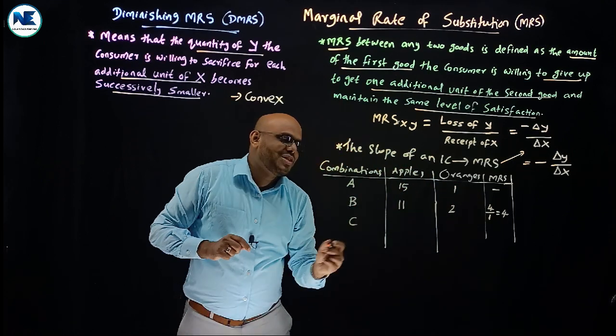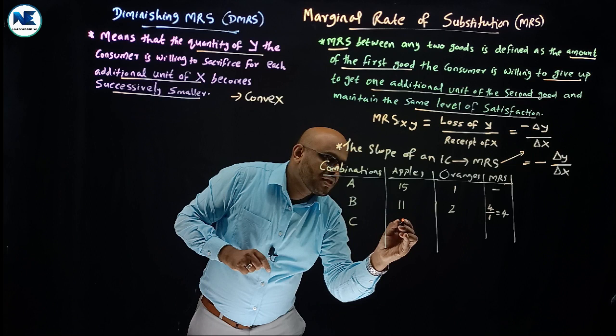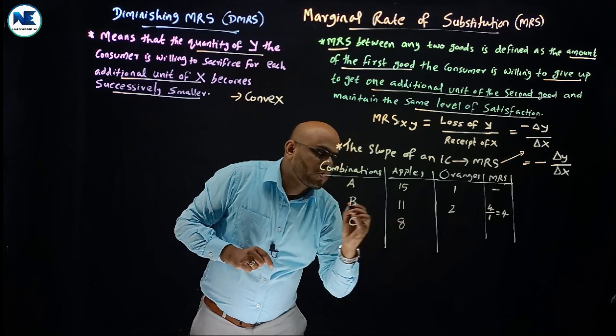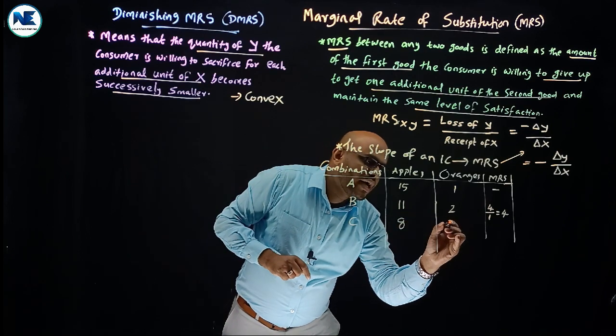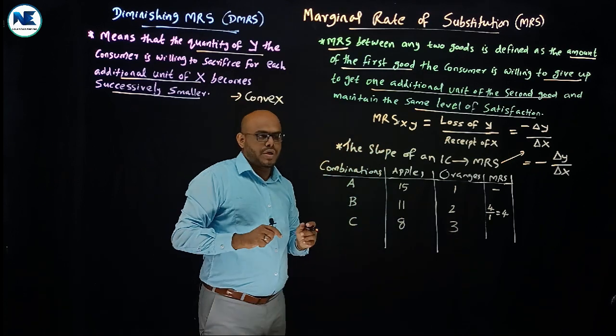In combination C: apples are 8 and oranges are 3. So moving from B to C, the loss of Y is 3 apples for 1 additional orange. MRS = 3/1 = 3.